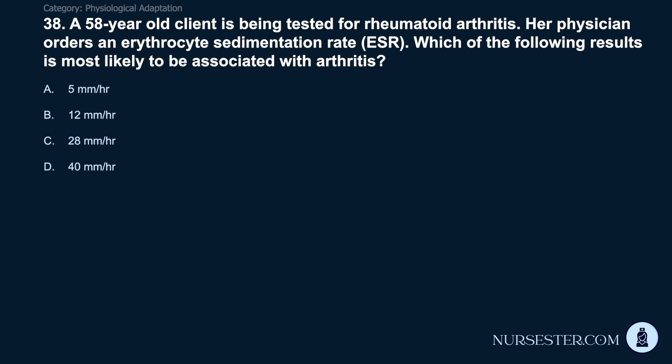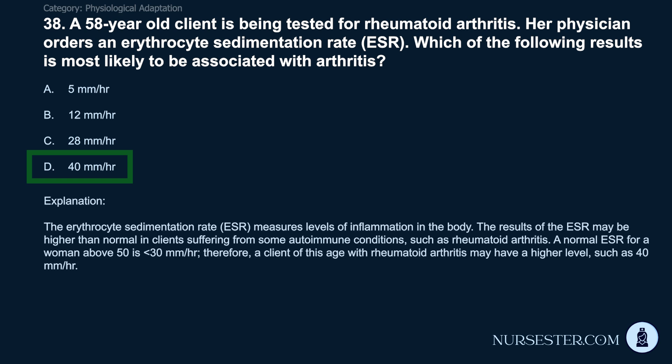Question 38: A 58-year-old client is being tested for rheumatoid arthritis. Her physician orders an erythrocyte sedimentation rate (ESR). Which result is most likely associated with arthritis? A) 5 mm/hr. B) 12 mm/hr. C) 28 mm/hr. D) 40 mm/hr. Correct answer: D. 40 mm/hr. The ESR measures levels of inflammation in the body and may be higher than normal in clients with autoimmune conditions such as rheumatoid arthritis. A normal ESR for a woman above 50 is less than 30 mm/hr, so a client with rheumatoid arthritis may have a higher level such as 40 mm/hr.